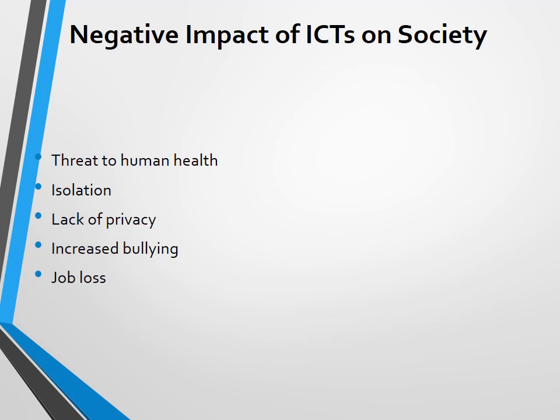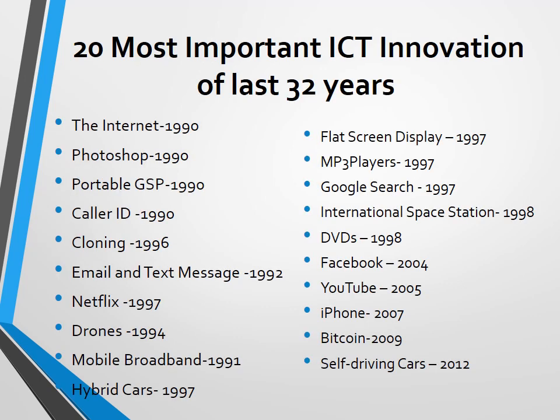There have been significant ICT innovations over the past 30 years. The internet came in the 1990s, followed by Photoshop, email, and text messages. Netflix arrived in 1997, enabling movies to be viewed online. Other innovations include the use of drones, mobile broadband, hybrid cars, flat-screen displays, and many others as shown on the screen.